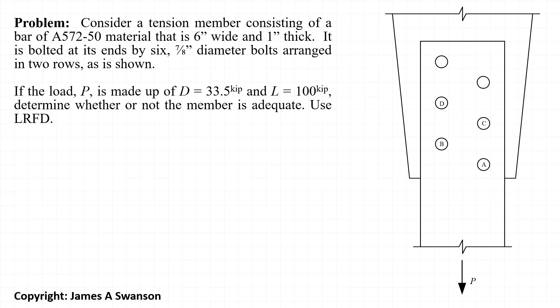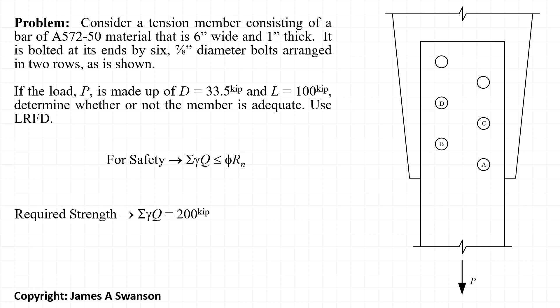This example is very similar to another example that I've worked and posted, and I would encourage you to take a look at that example if you haven't seen it already — there should be a link in the video at this point. From that earlier example, we know that the equation we're ultimately trying to evaluate is whether the sum of gamma times Q is less than or equal to phi times R sub n — whether the factored loads are less than or equal to the factored resistance. The required strength, the sum of gamma times Q, equals 200 kips.